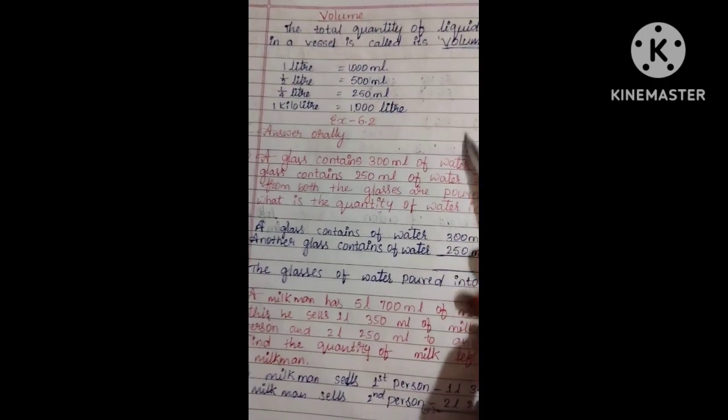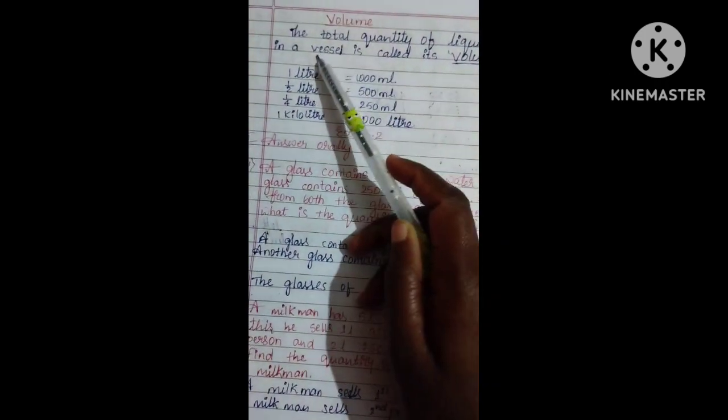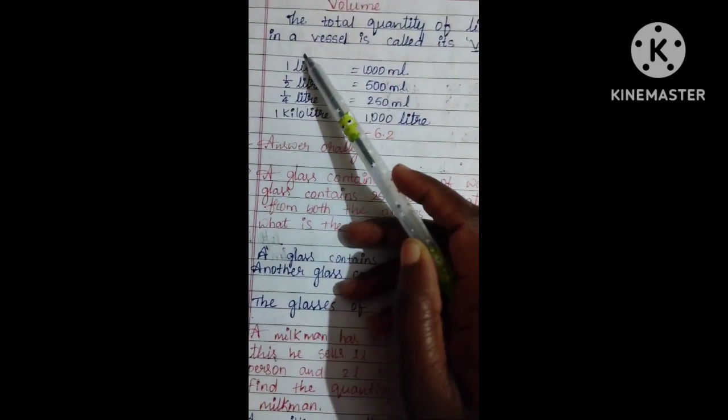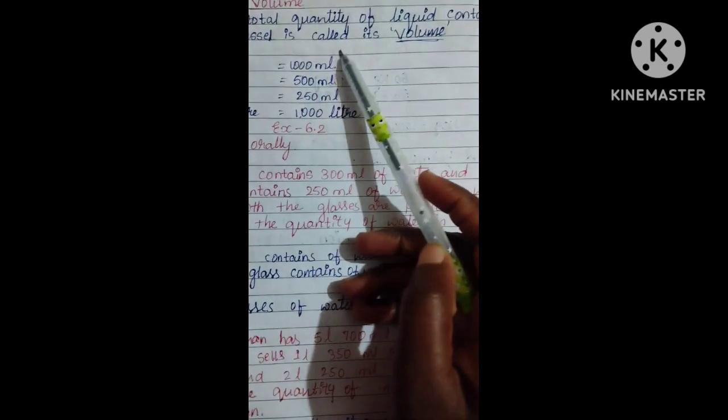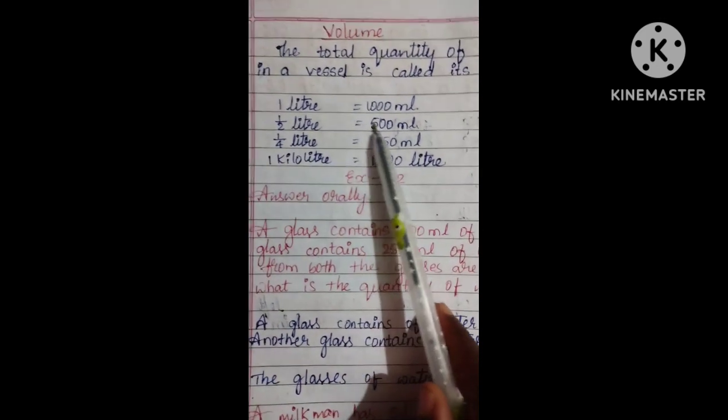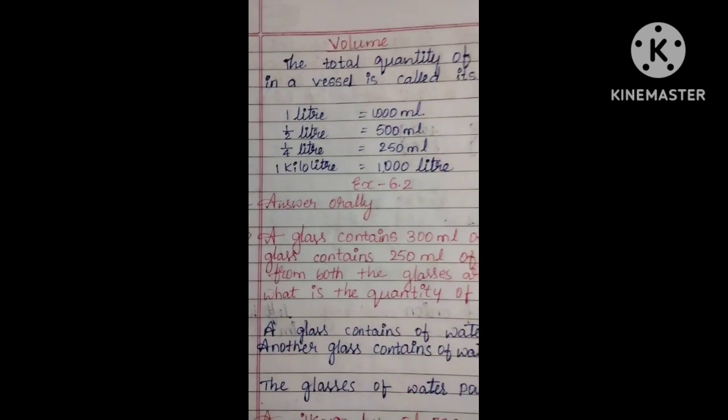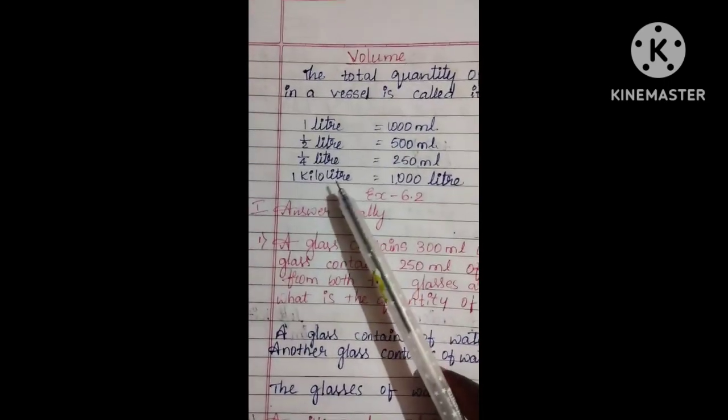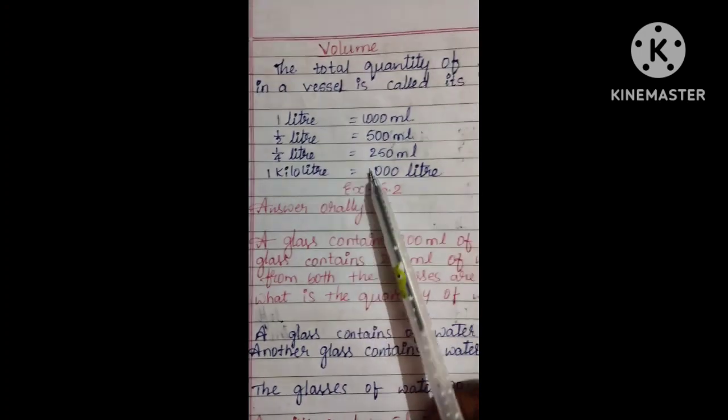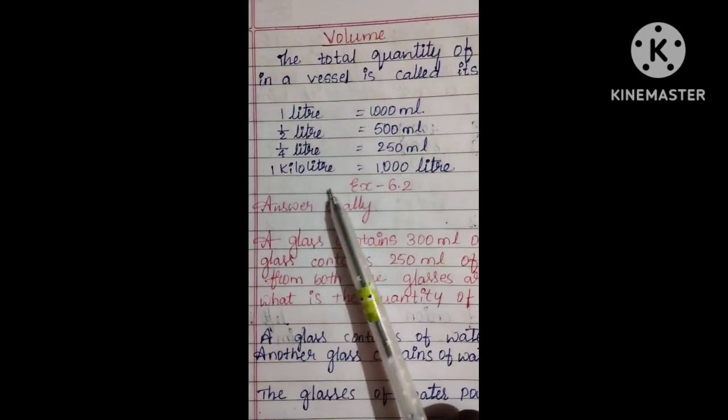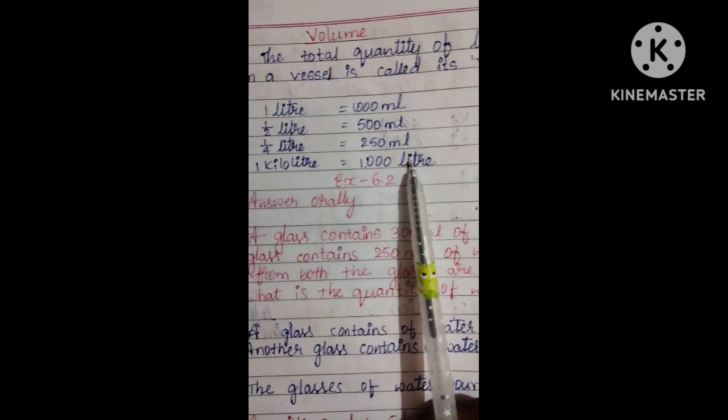This is volume. The total quantity of liquid contained in a vessel is called its volume. Here, 1 liter equals 1000 milliliters. Half liter equals 500 milliliters. One-fourth liter equals 250 milliliters. 1 kiloliter equals 1000 liters.